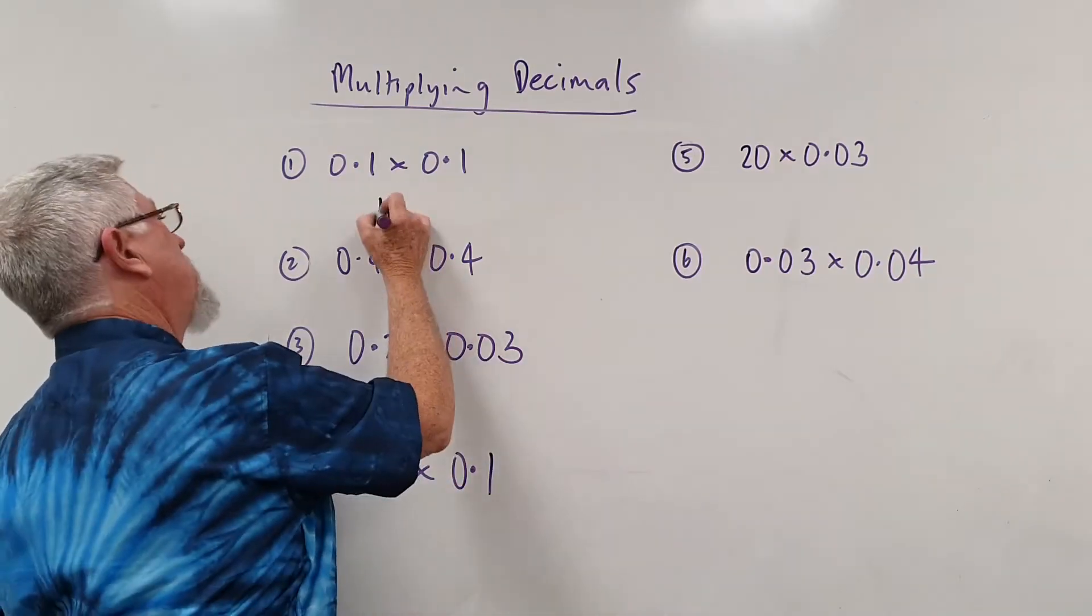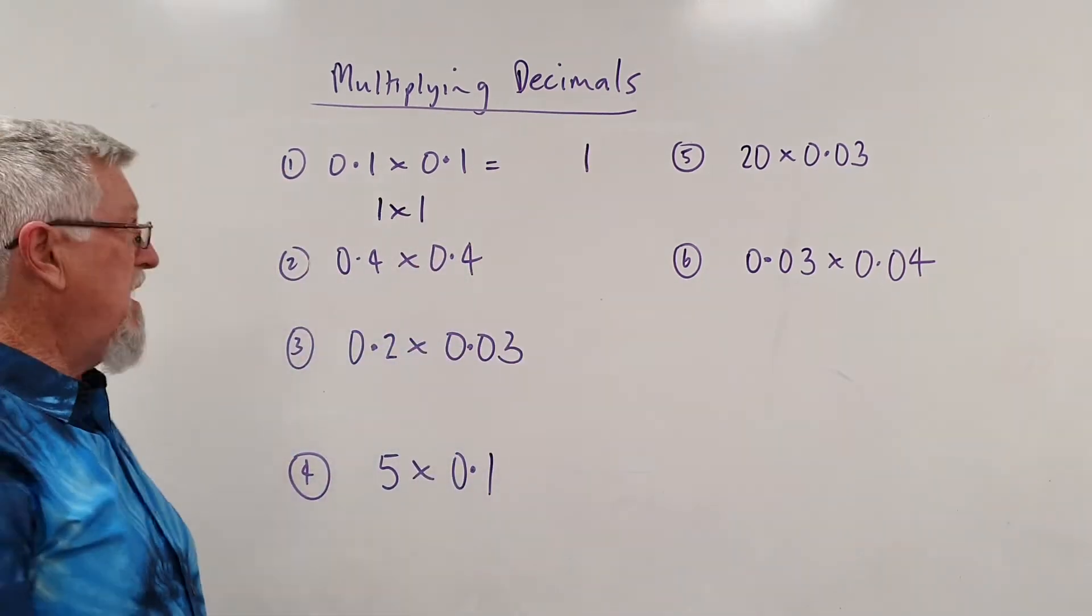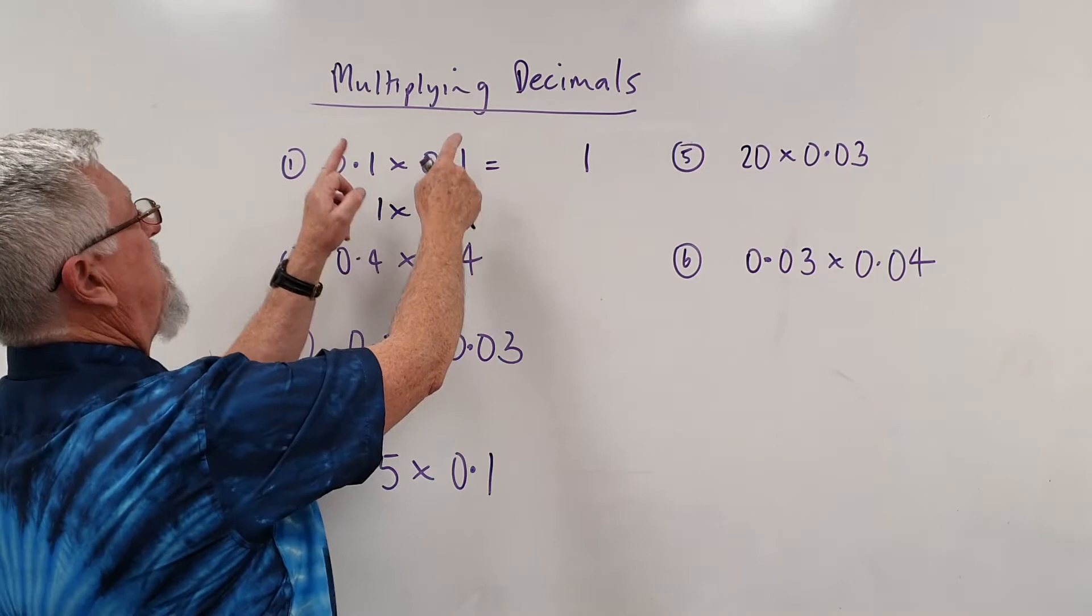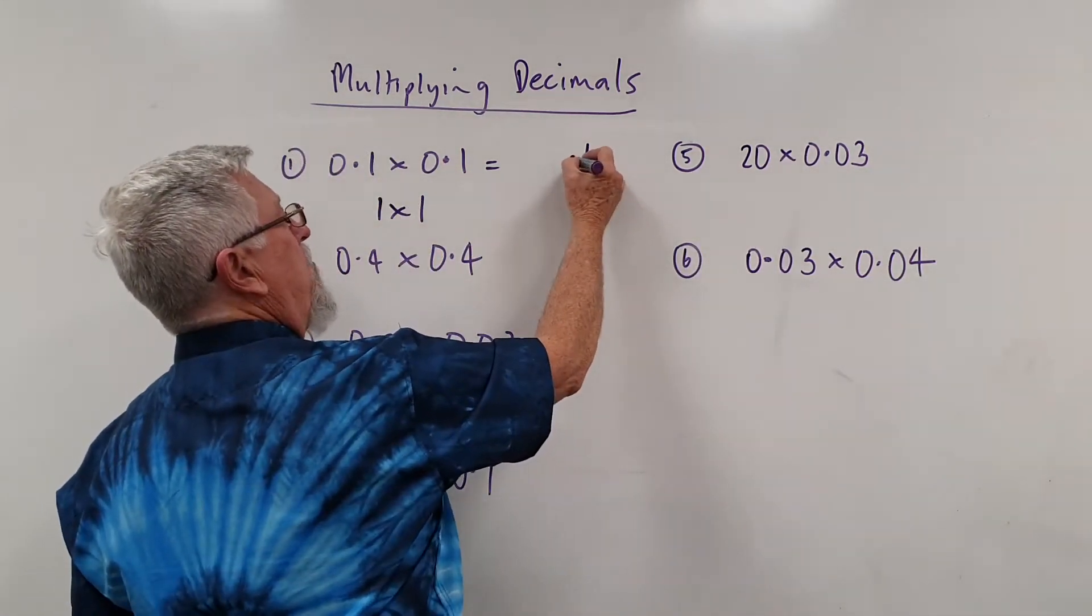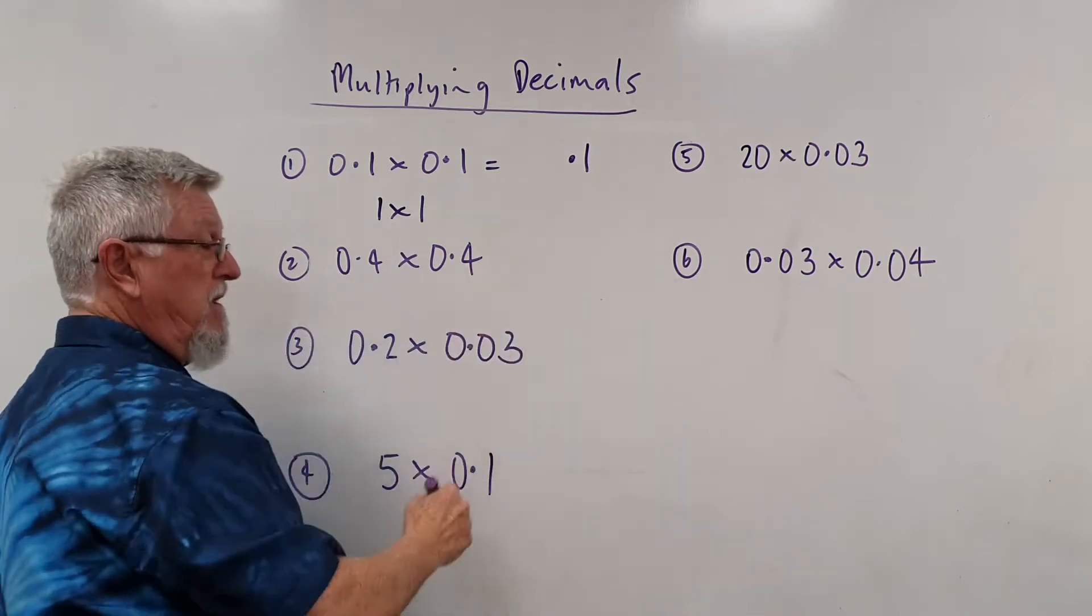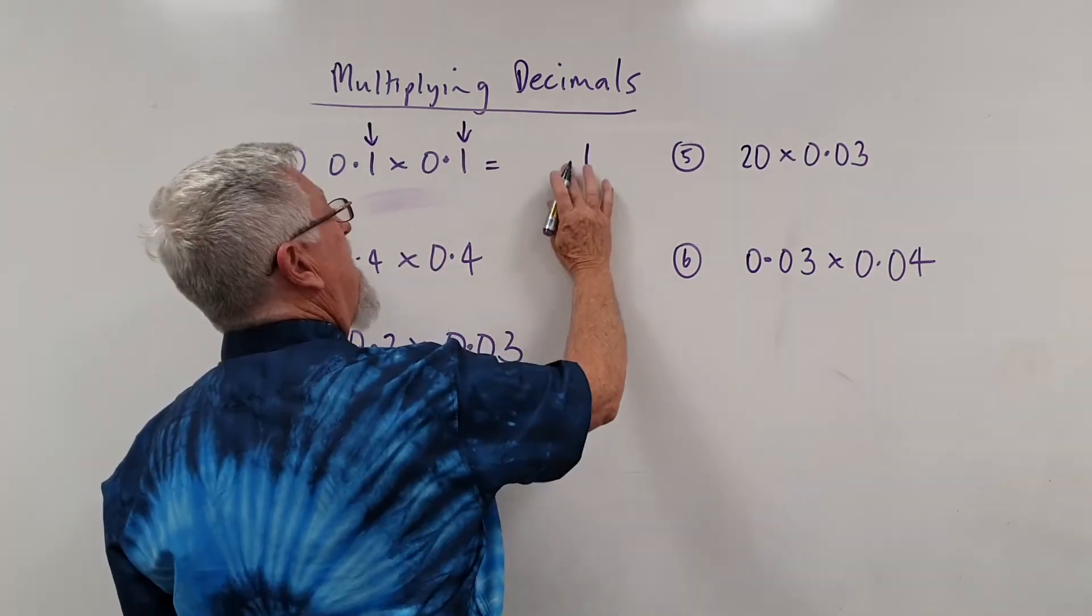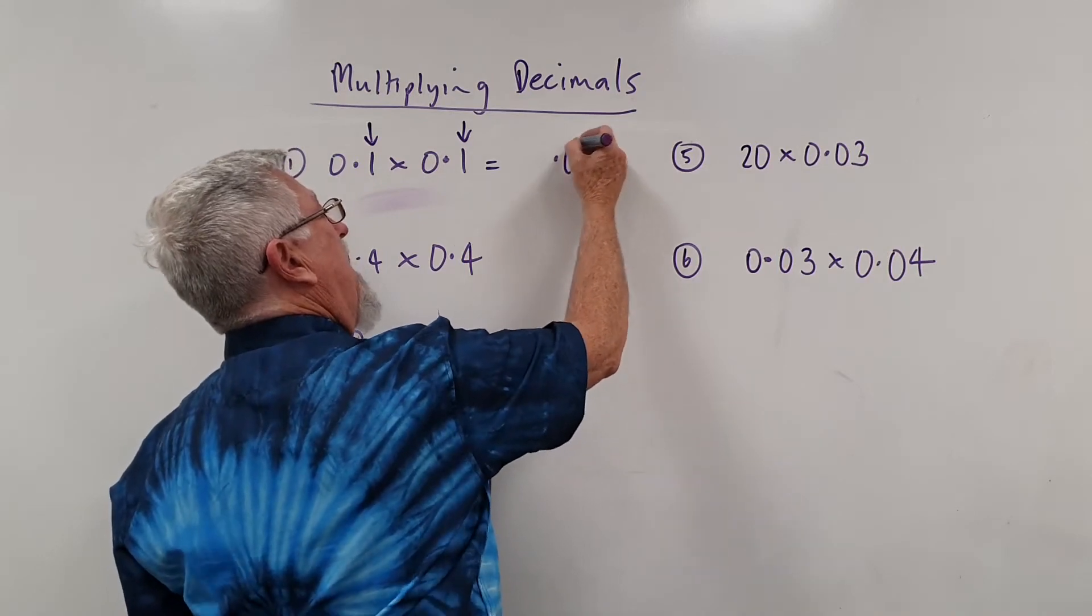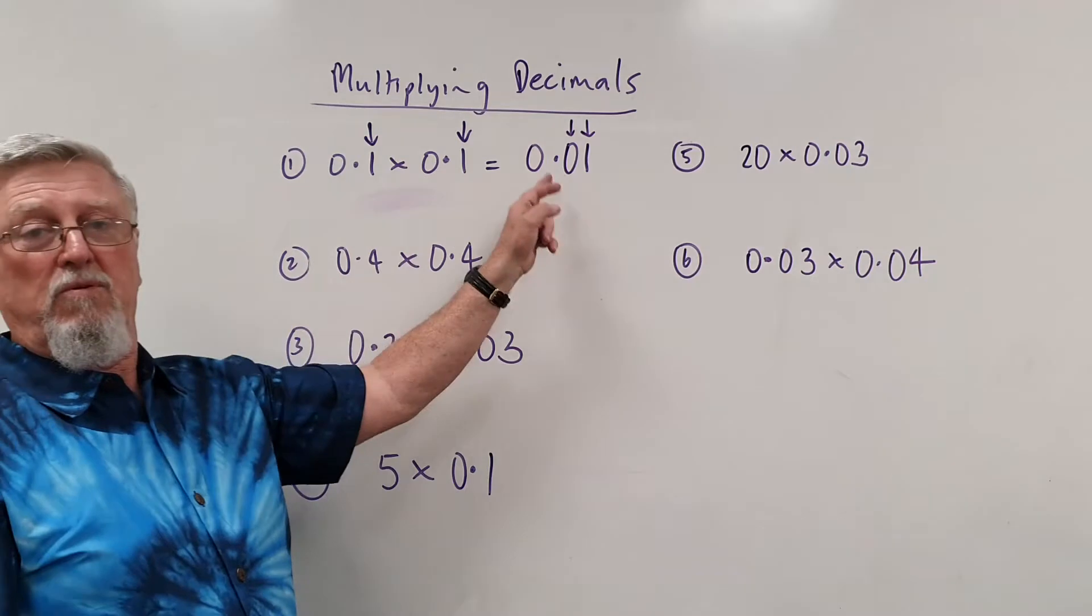If I ignore the decimals, I'm just doing one times one, which has to be one. But the answer has to have the same number of decimals after the decimal point. So if I put the point there, it's only got one. If you look up here, there was one, there was one, it has to have two. So it can't be there, it's got to be there, because there you can see the two decimals there become two decimals there.